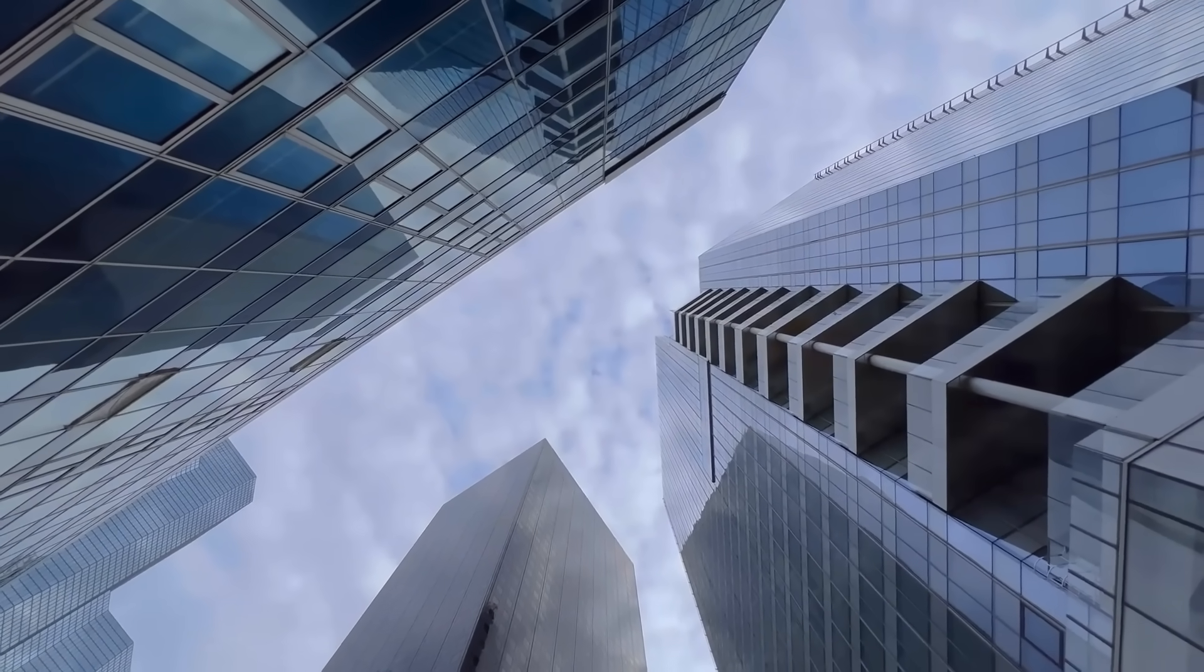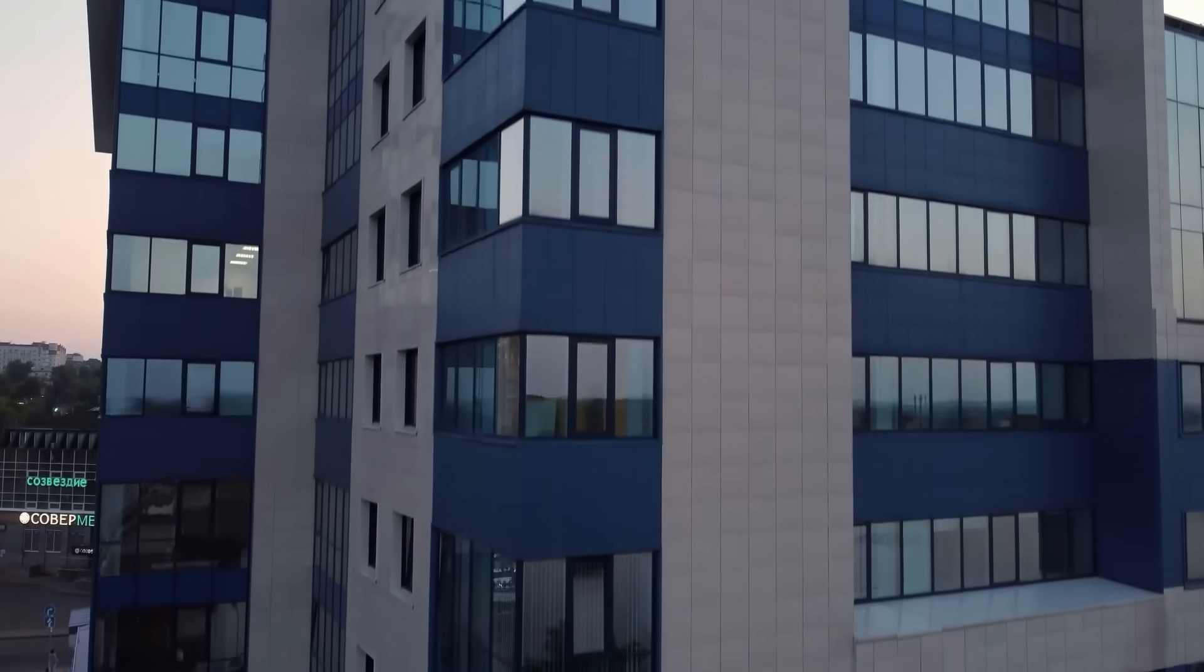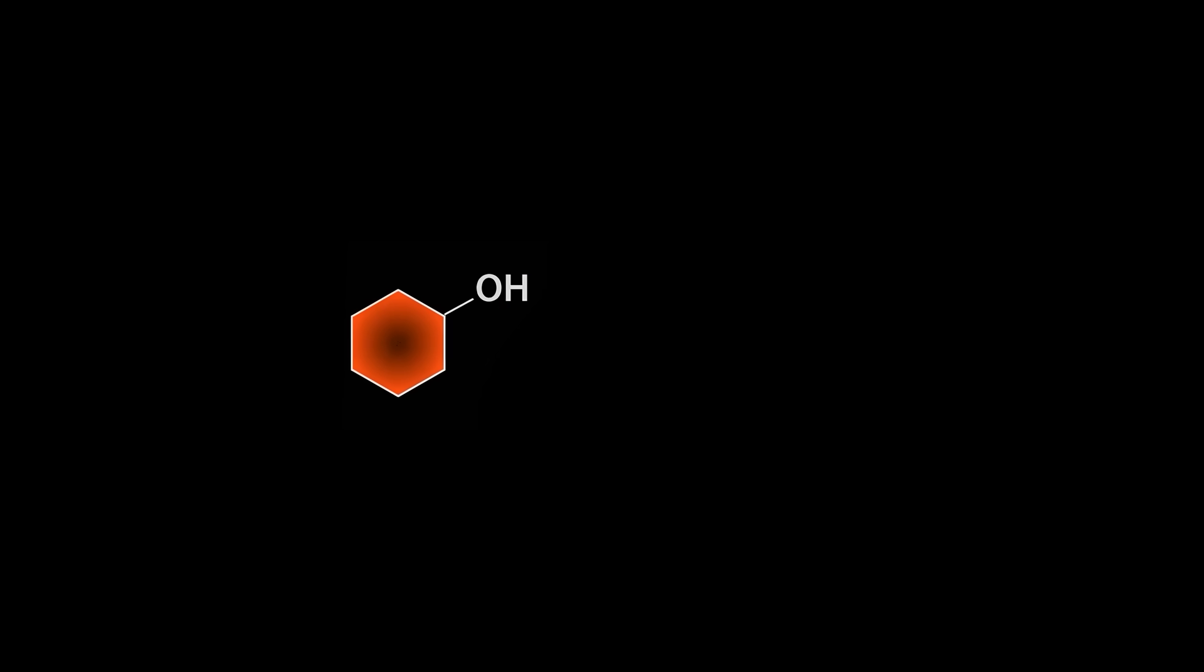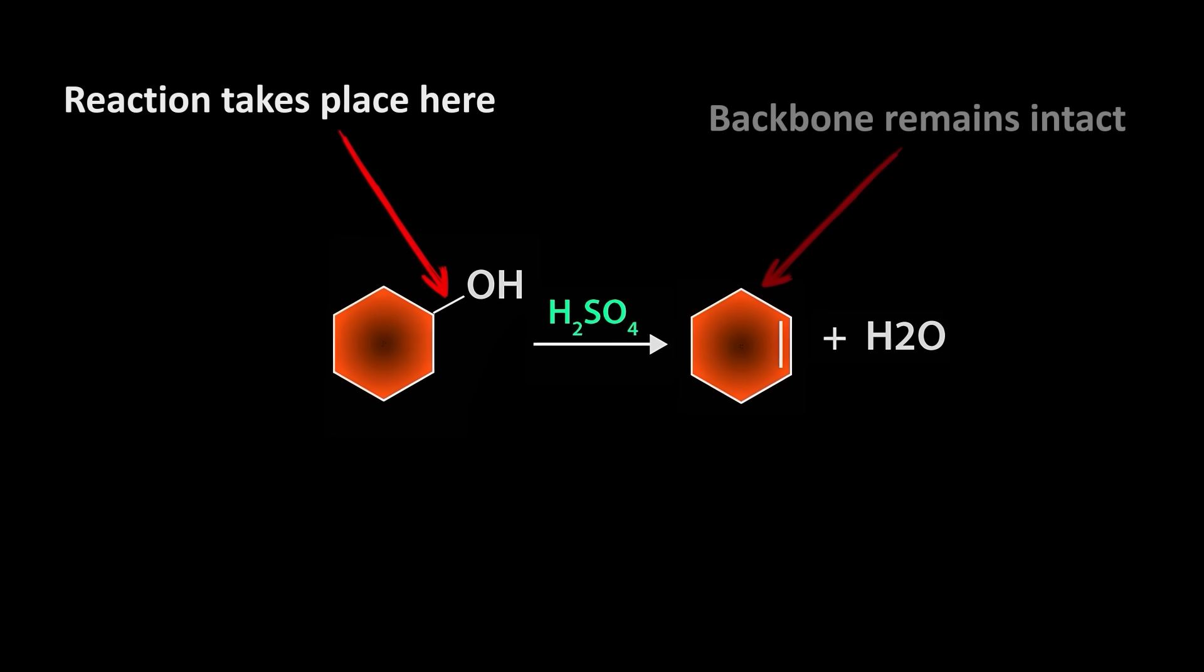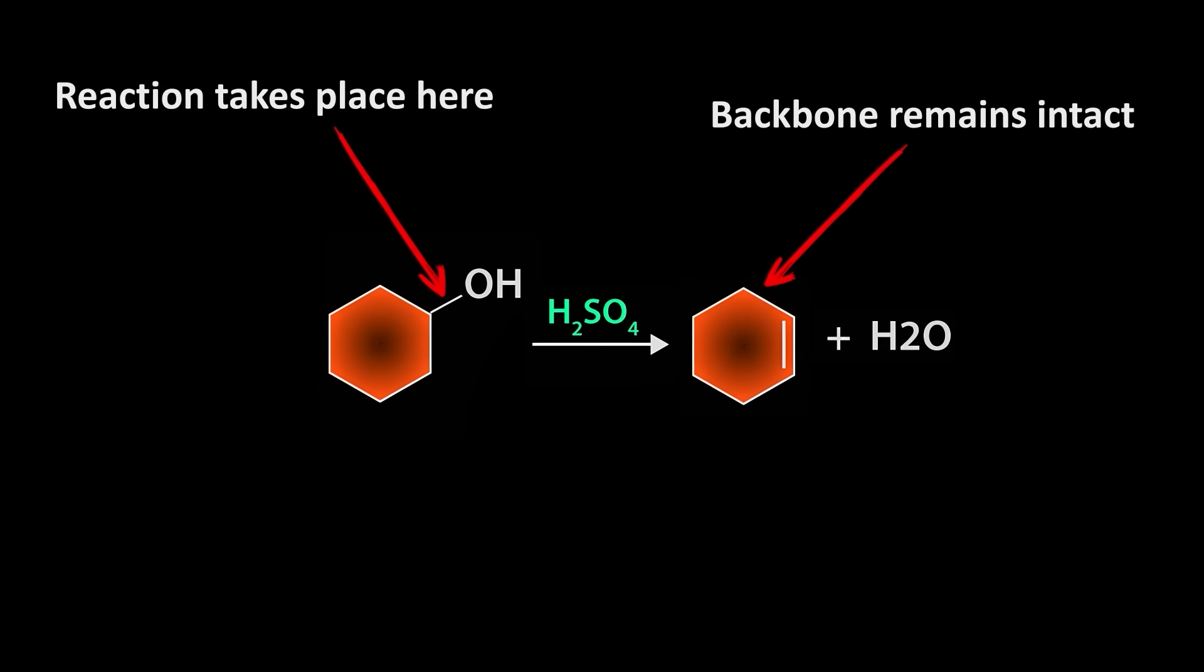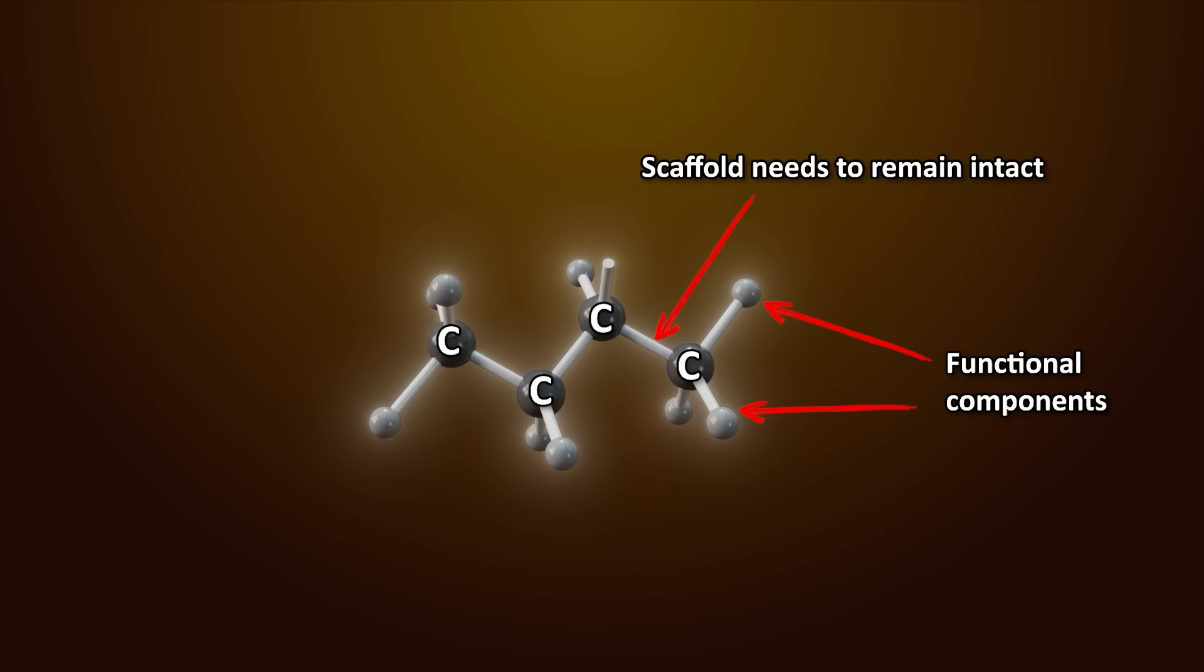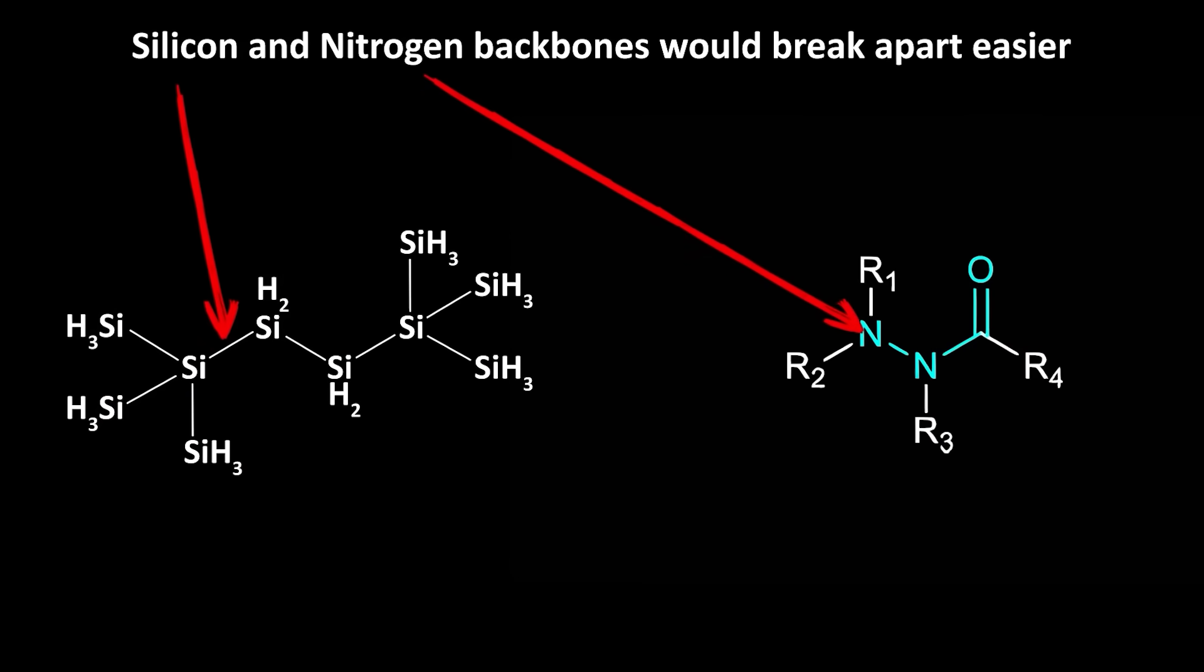You can't make a skyscraper with a foundation built from cardboard. The structural support has to be strong to hold the walls, windows, and doors. Organic molecules have the same need. The backbone has to be strong enough to withstand the conditions under which other parts of the molecule break their bonds and react chemically. So the carbon-carbon scaffold needs to remain intact while the functional components break apart.